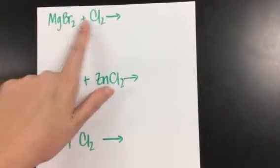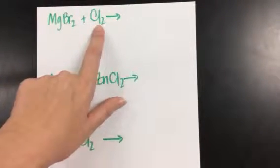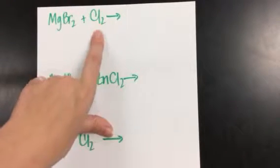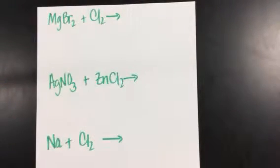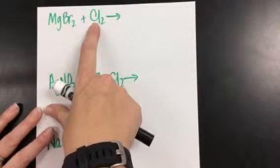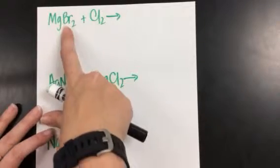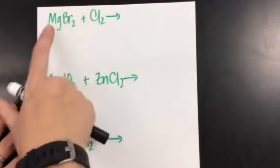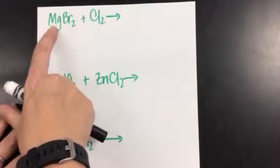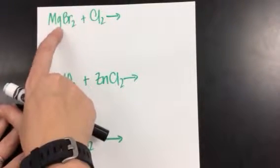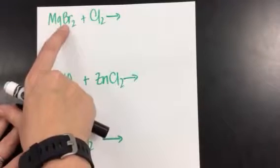This is a compound and a single element, so as we learned in the last video, this is called a single replacement type reaction. For your single replacement type reaction, you're going to have to make sure that your anions replace anions. So chlorine is an anion, and so is bromine — these two are going to trade places. Your magnesium has to be paired up with another anion, so you have a cation here and an anion.